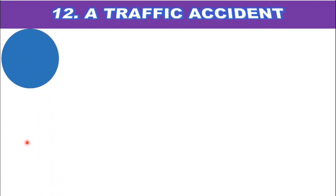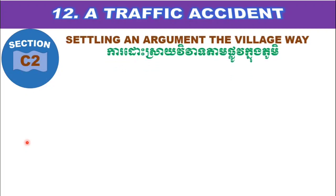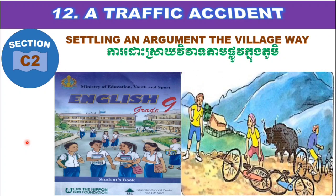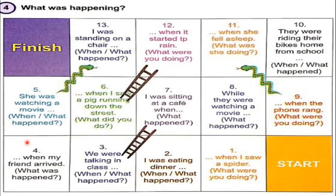Hello everyone, nice to see you again. Today we continue Unit 5: A Traffic Accident, Section C, Part 2 — Settling an Argument at the Village Way. Let's continue our lesson. Number 4: What's happening? I want to introduce a feeling game. Do you want to play this game today? I want to tell you how to play this game.